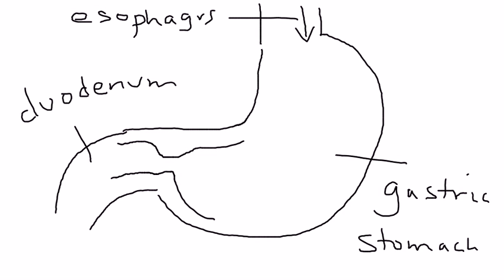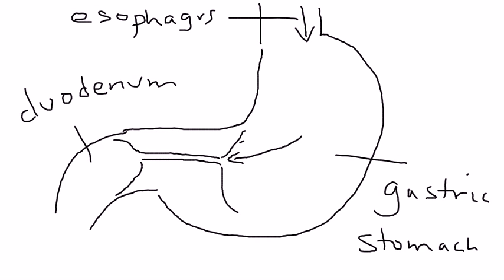In pyloric stenosis, what you have is a situation where, as the word stenosis implies, it's extremely stenotic. So it would essentially be something like this, a very narrow, even narrower gap occurring. That stenosis prevents food from traveling from the stomach into the duodenum, essentially causing an obstruction—gastric outlet obstruction. That's the fundamental aspect of pyloric stenosis.